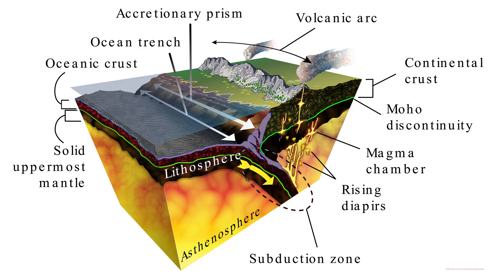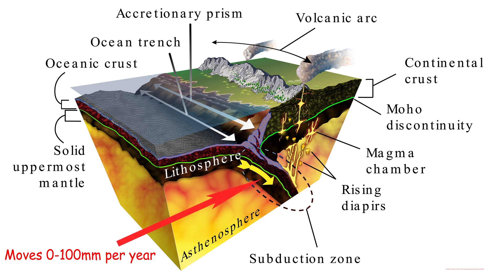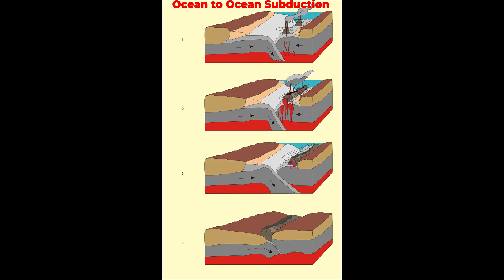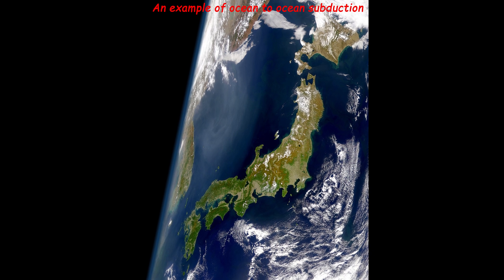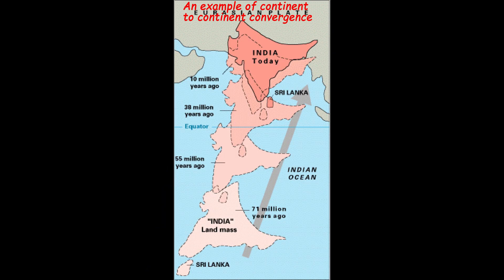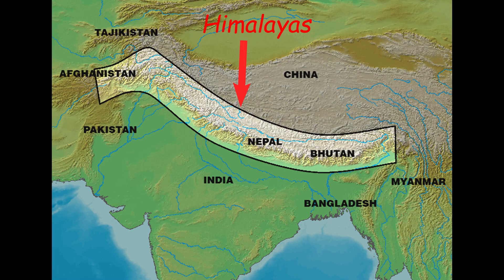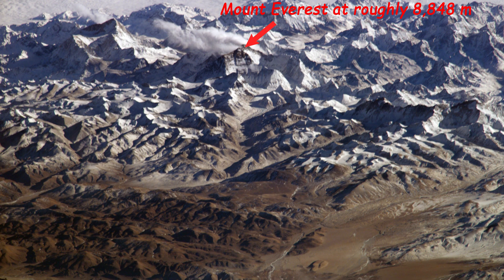Convergent boundaries arise when two plates slide towards each other. The thick oceanic lithosphere plunges into the less dense continent during zones of ocean-to-continent subduction — an example being the Cascade Mountain Range in the United States of America. Older, colder, denser crust slides beneath less dense crust at zones of ocean-to-ocean subduction, with the islands of Japan as an example. Ocean-basin closure can occur on continent-to-continent boundaries because of collisions between masses of continental lithosphere. An example occurred when the Indian landmass collided with the Eurasian plate, creating the Himalayas and the tallest mountain today, Mount Everest.